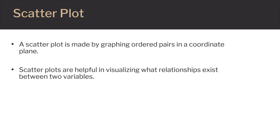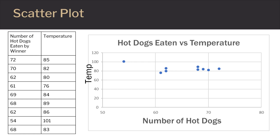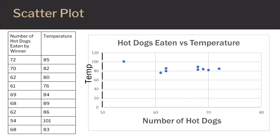A scatter plot is made by graphing ordered pairs in a coordinate plane. Scatter plots help us see relationships that occur between two variables. If there is a correlation or relationship between the two variables, then you expect to see a general pattern like a line or a curve in the scatter plot. Here we have a scatter plot of two variables. The first column, graphed along the horizontal or x-axis, is the number of hot dogs eaten by the winner. The second column, graphed along the vertical or y-axis, is the temperature on the day of the contest. Is there a relationship between the outside temperature and the number of hot dogs eaten? Looking at the graph, you can see that these points jump around a great deal and are not nicely lined up. This tells us that the number of hot dogs eaten does not seem to change as the temperature changes.